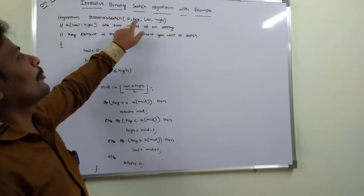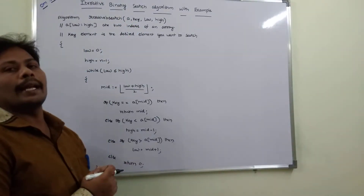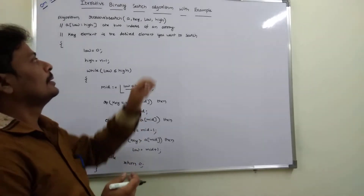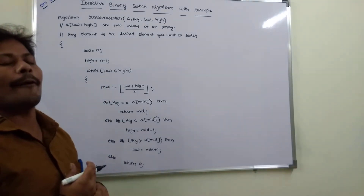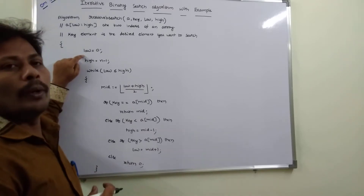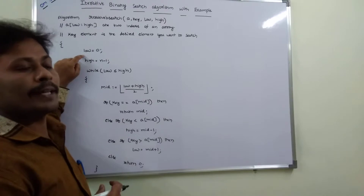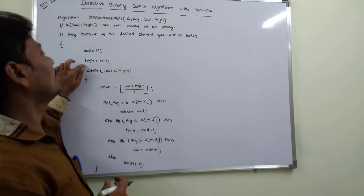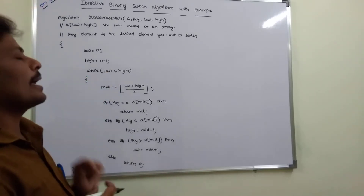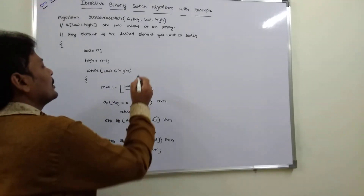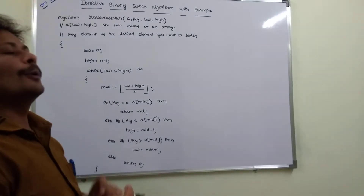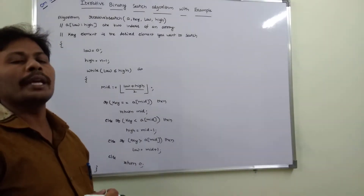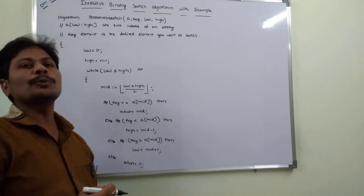This is the iterative binary search algorithm. It takes four parameters: A is the array, key is the element you want to search, and low and high are the two indexes. Low is initialized to 0 (first element index) and high to n minus 1 (last element index). While low is less than or equal to high, we compute mid = (low + high) / 2, and use this mid value to partition the list into two sublists.